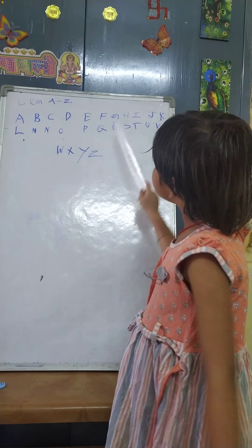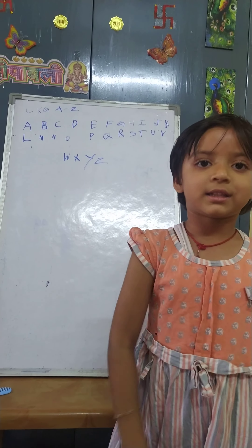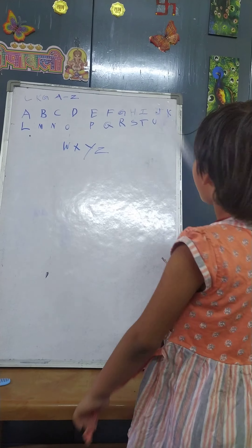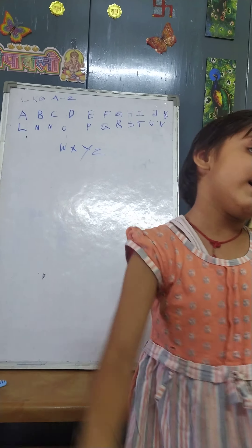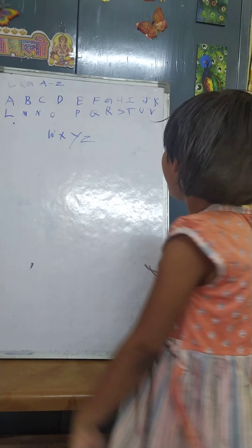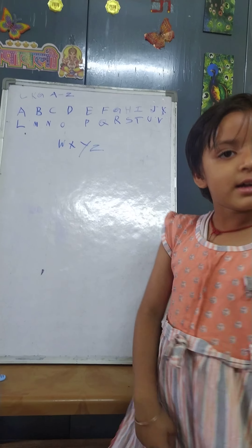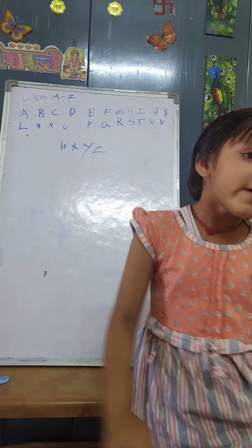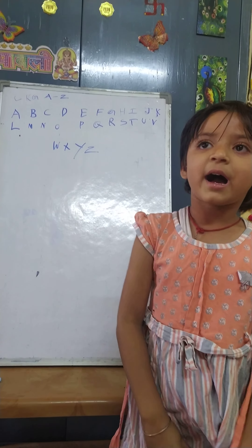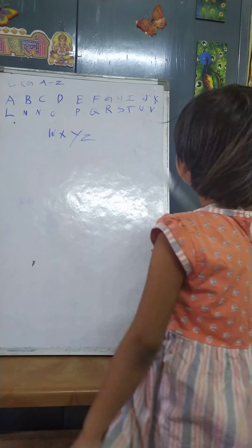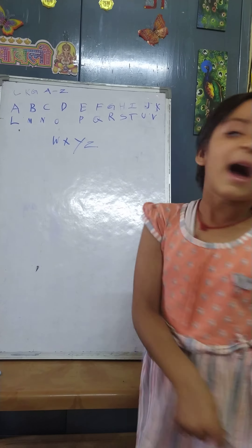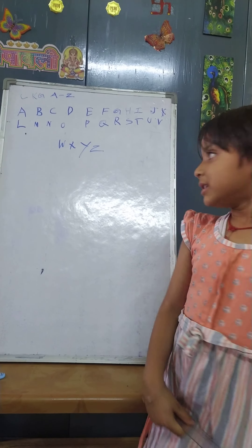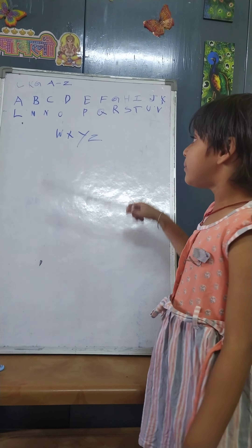R for rabbit, I for sun, C for tiger, U for umbrella, C for hand, W for watch,